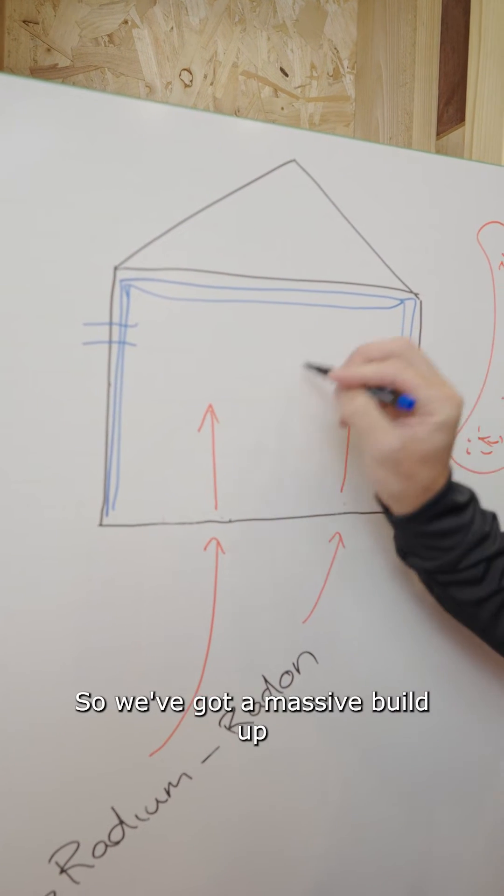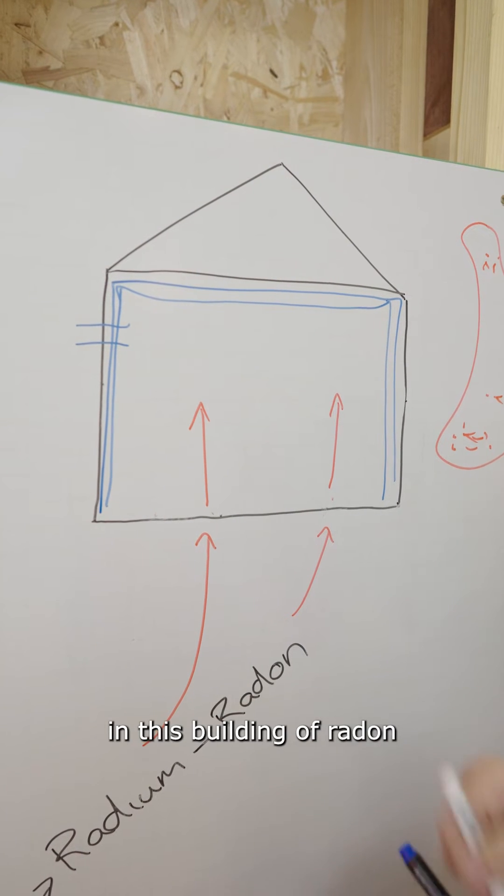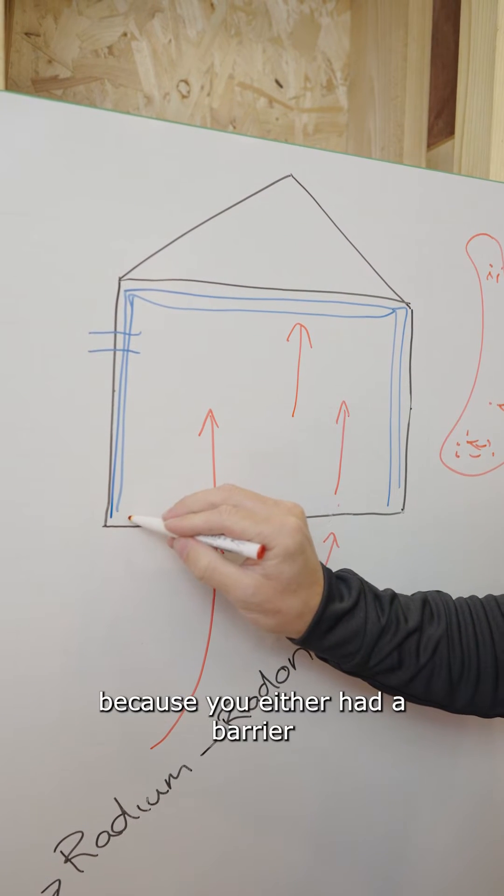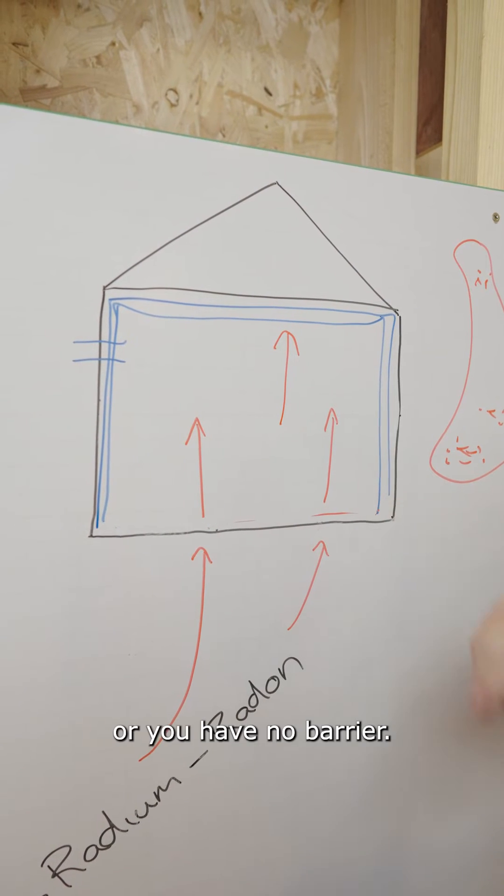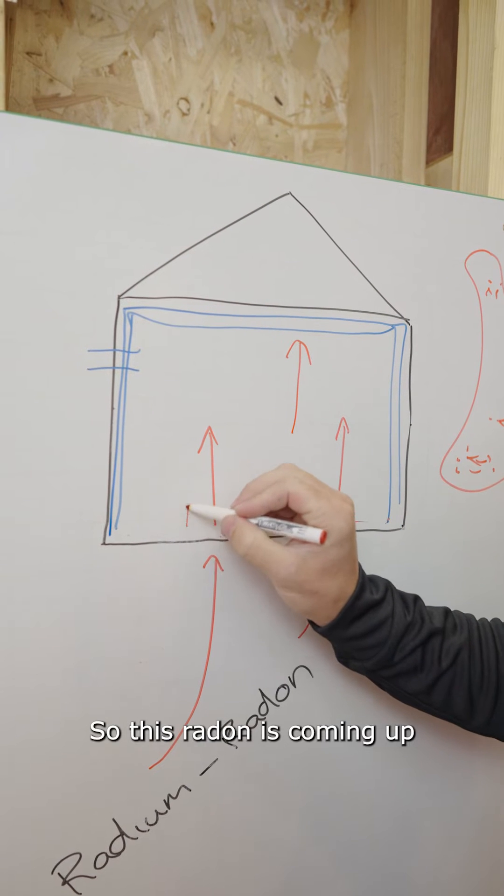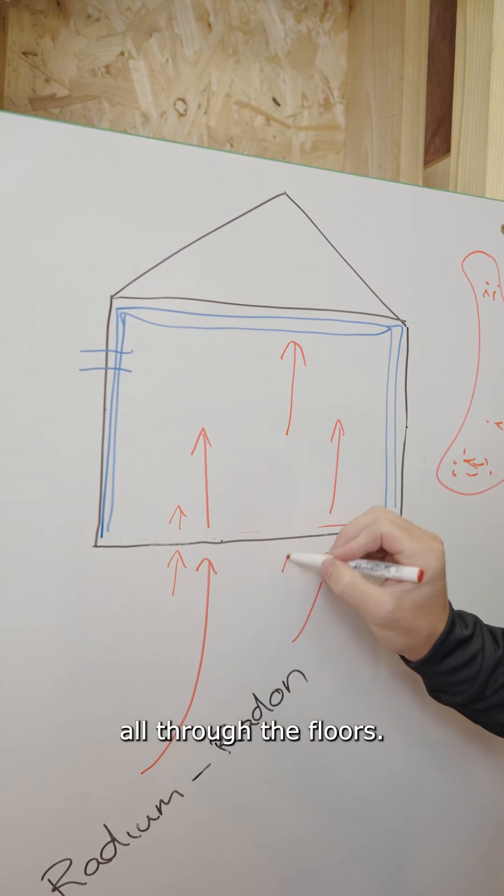So we've got a massive build up in this building of radon because you either had a barrier maybe in the past or you have no barrier so this radon is coming up all through the floors.